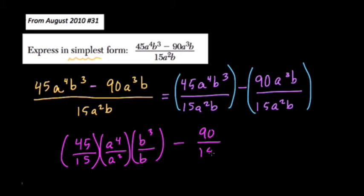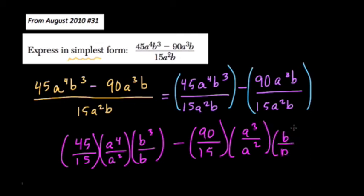And then we have 90 over 15 times a³ over a² times b over b. Now you want to reduce. b over b is just 1.